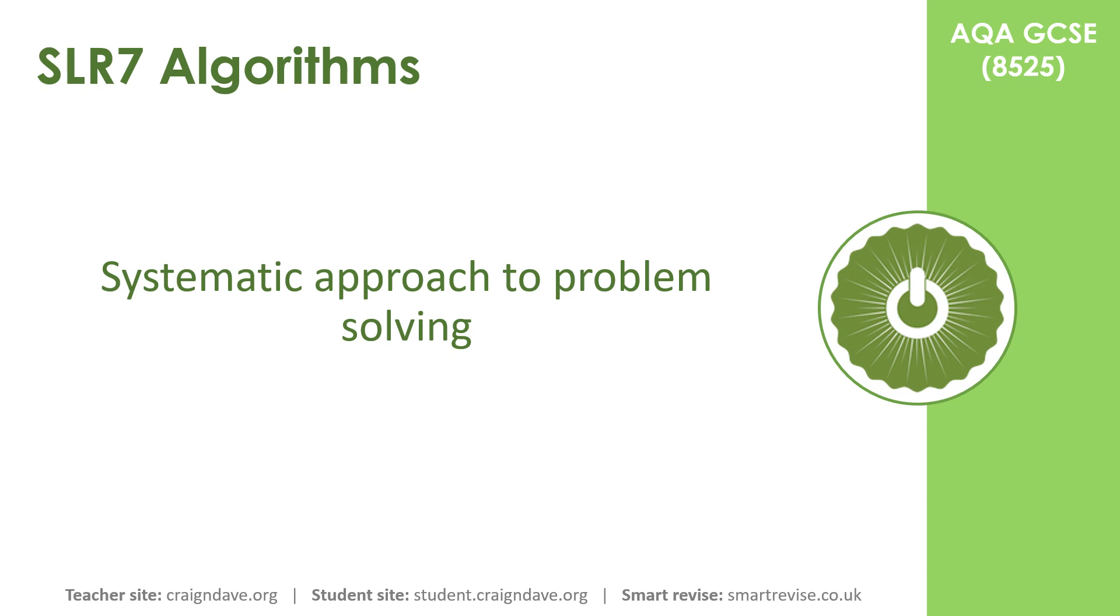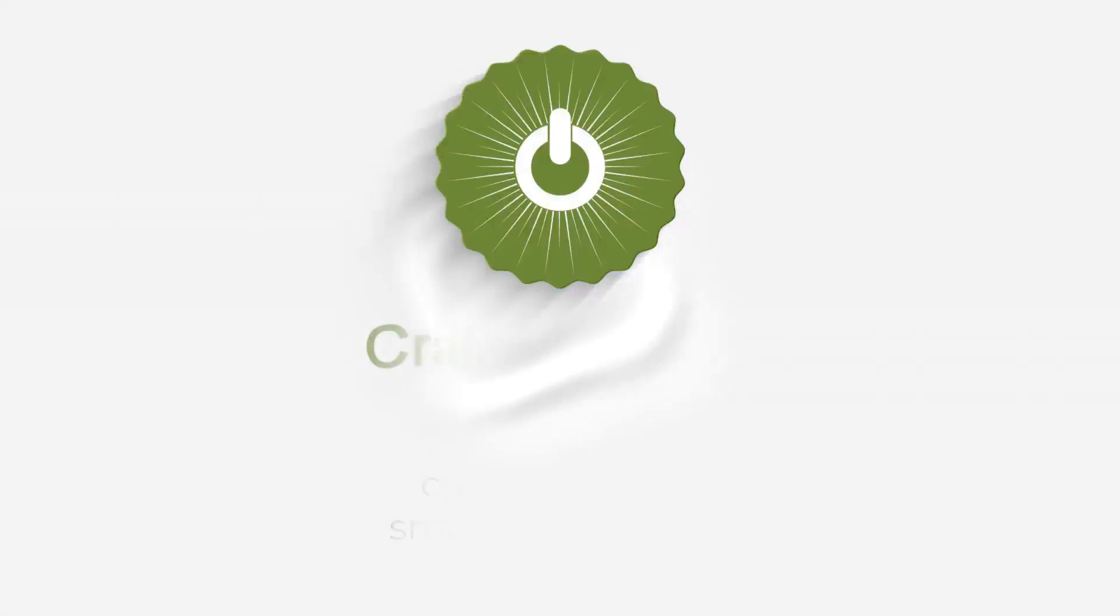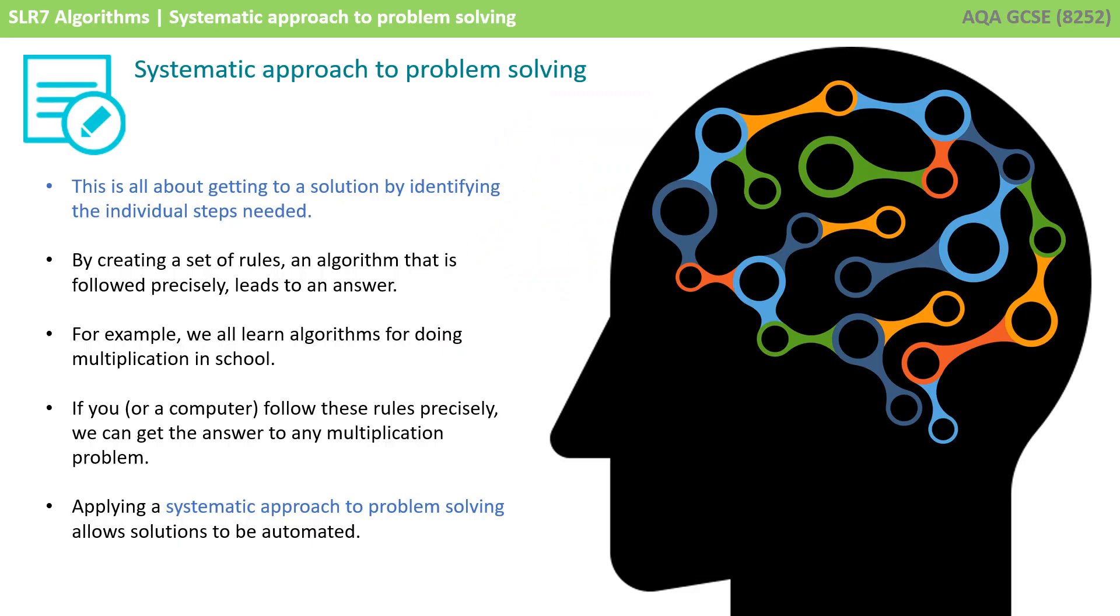In this video, we have a look at what we call the systematic approach to problem solving. So what do we actually mean when we talk about a systematic approach to problem solving? Well, simply, this is all about getting to a solution by identifying the individual steps needed. And there's a number of ways and skills of doing this, which we're going to look at during this video. By creating a set of rules, an algorithm that is followed precisely, we can get to an answer.